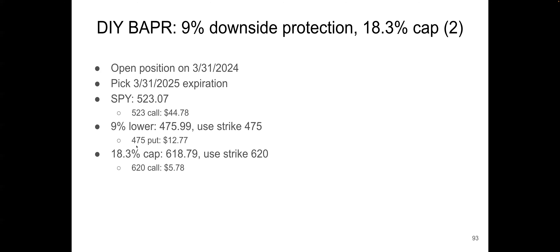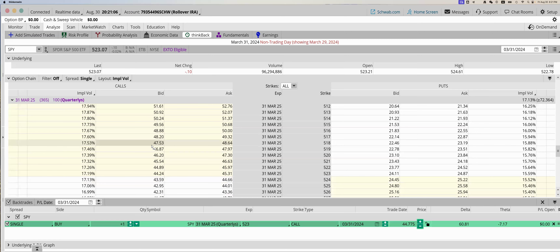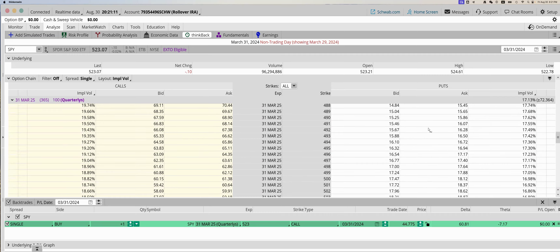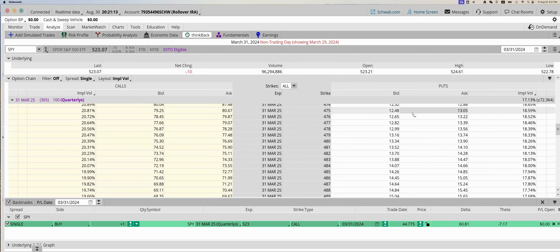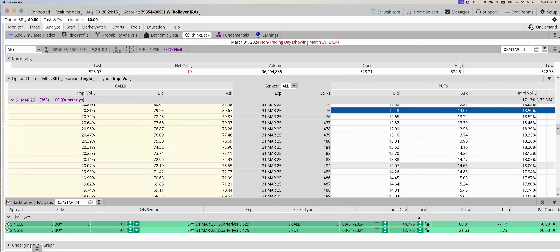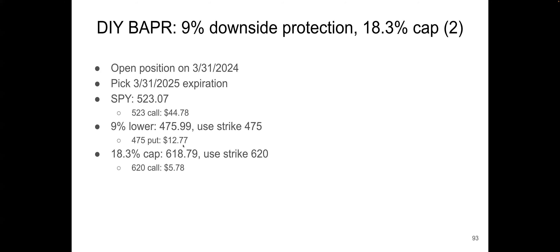Similarly, for the 475 put, let's look it up — puts are on the right side. The price is $12.77. And similarly, you can get the call price for the 620 strike, which is 18% above the current price. That call price is $5.78. This is how we get all these prices.